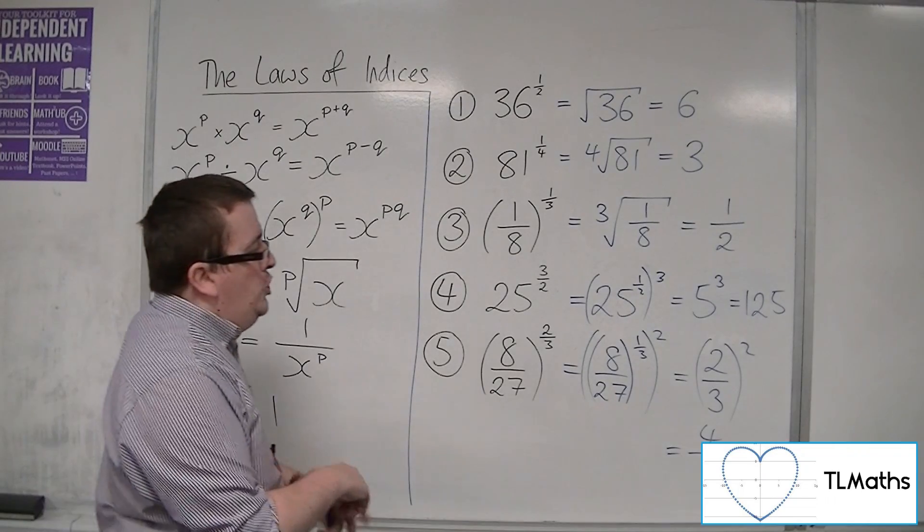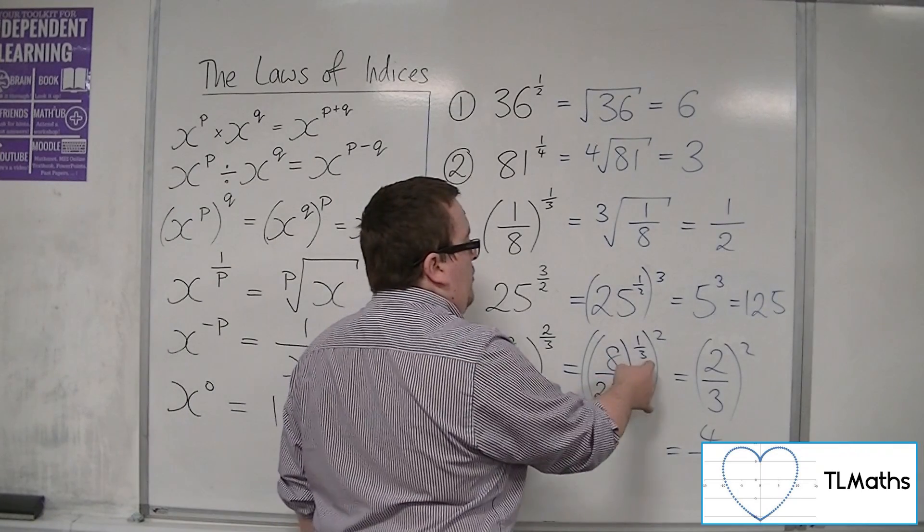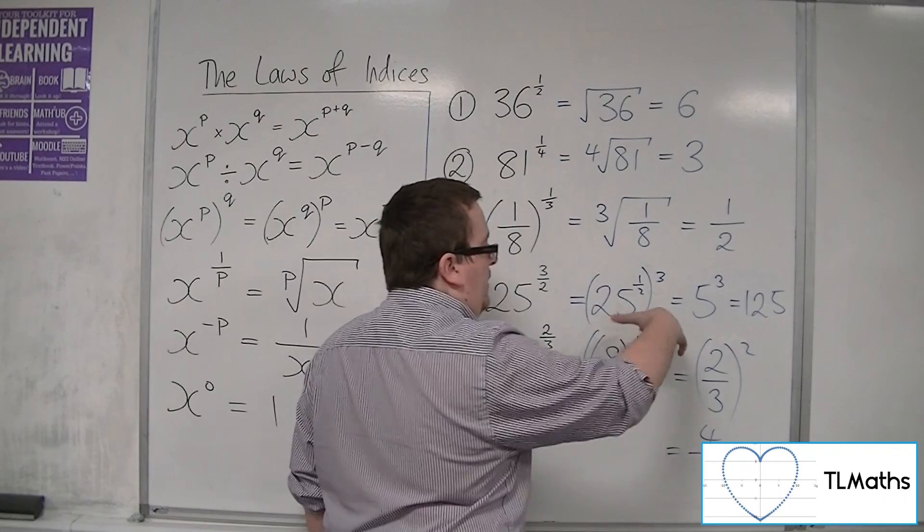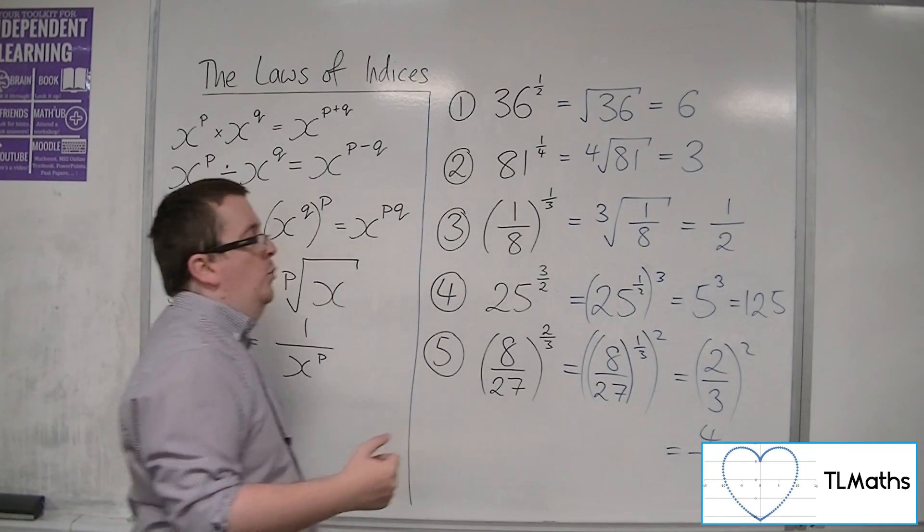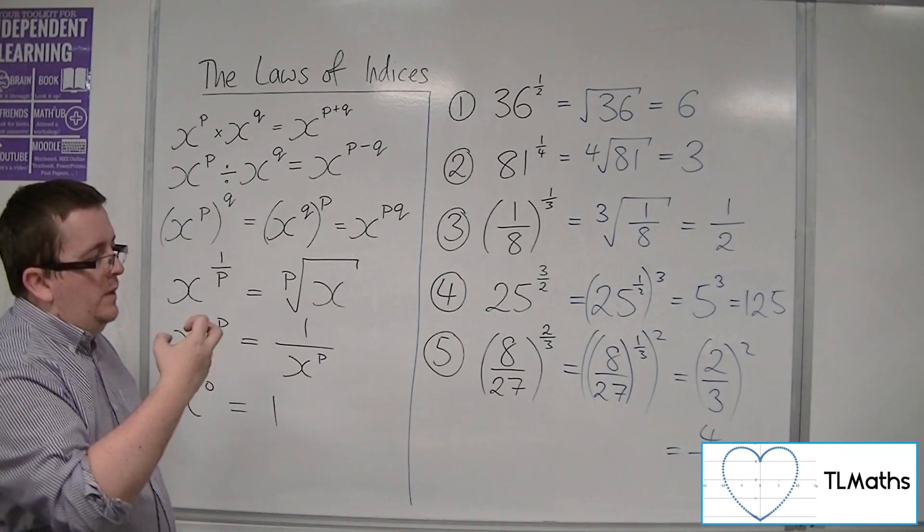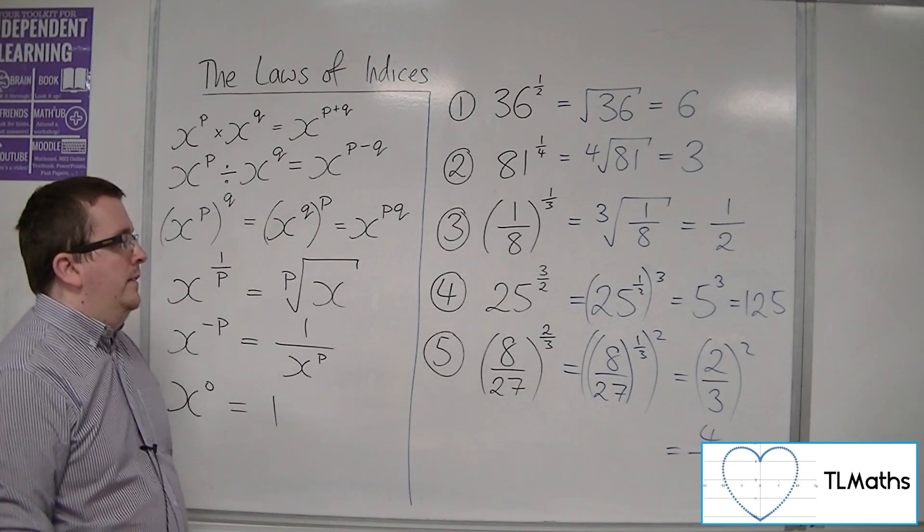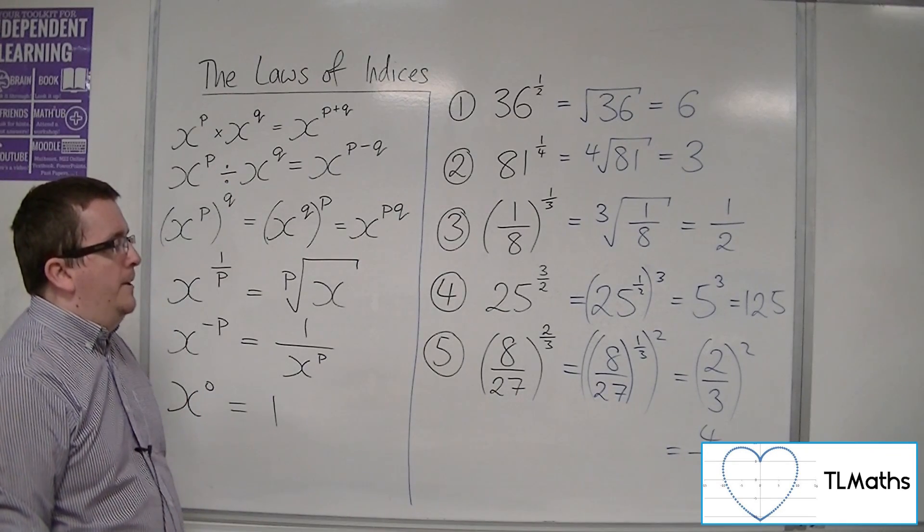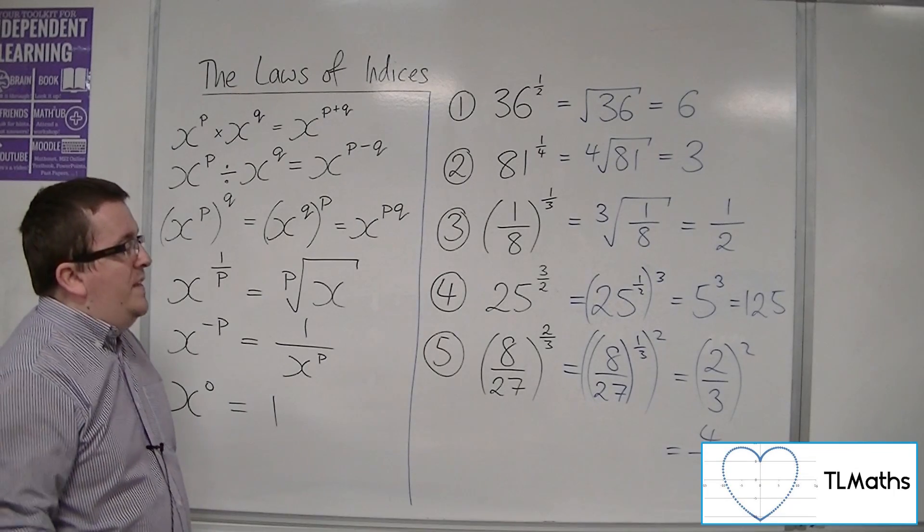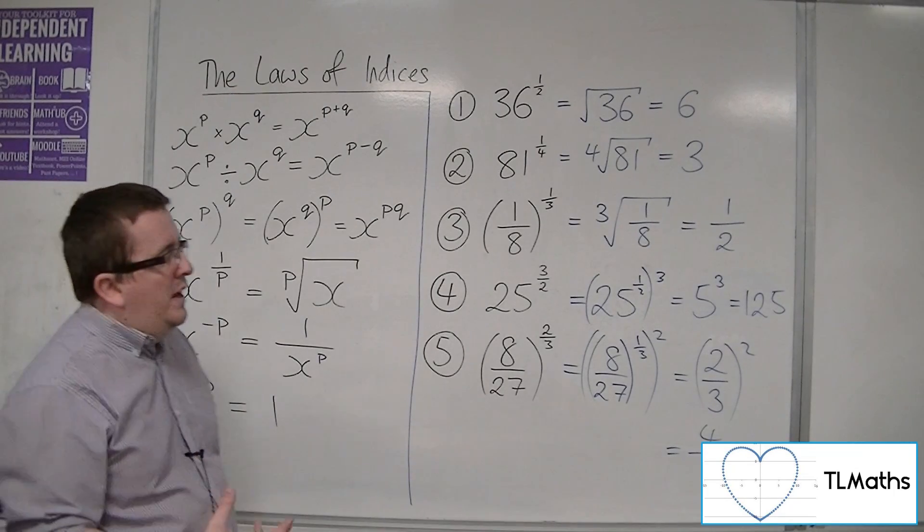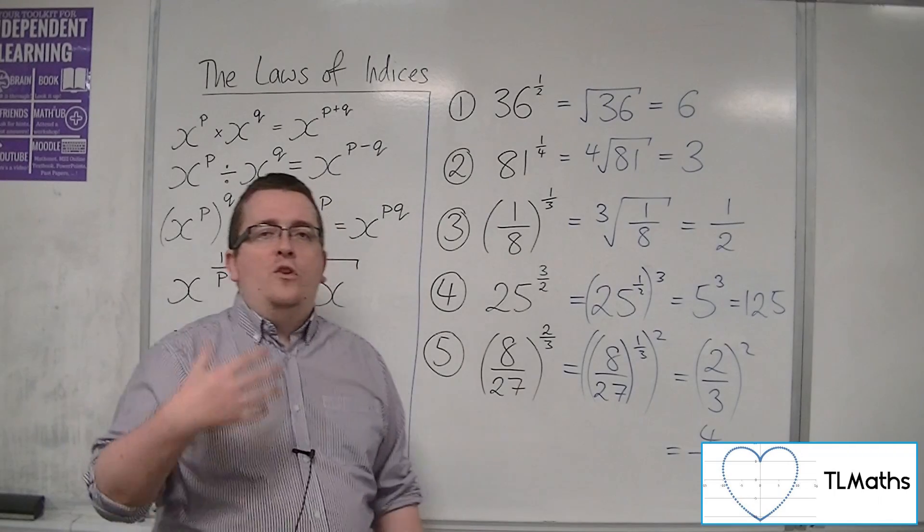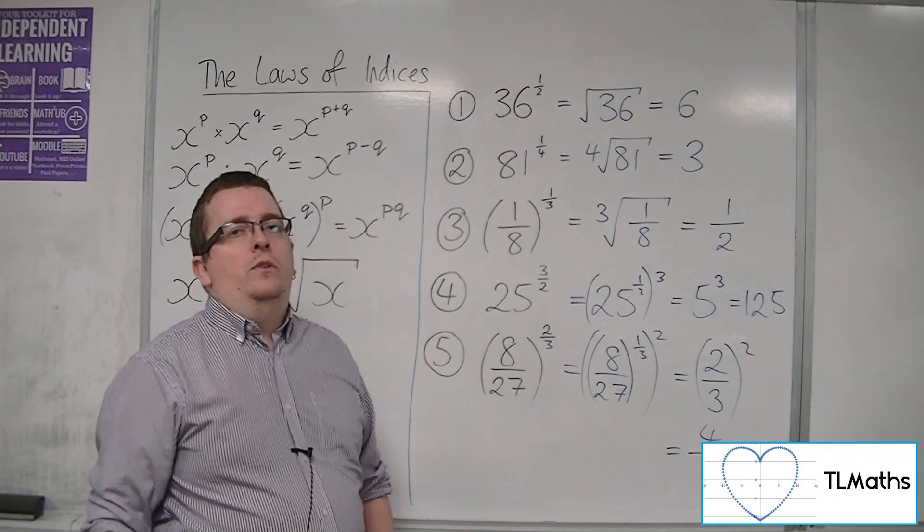So in general, I would deal with the root first, and then deal with the integer. It would be a lot easier working it through that way. So in the next video, we'll mix it up, go through a couple of examples where we've got negative rational indices.